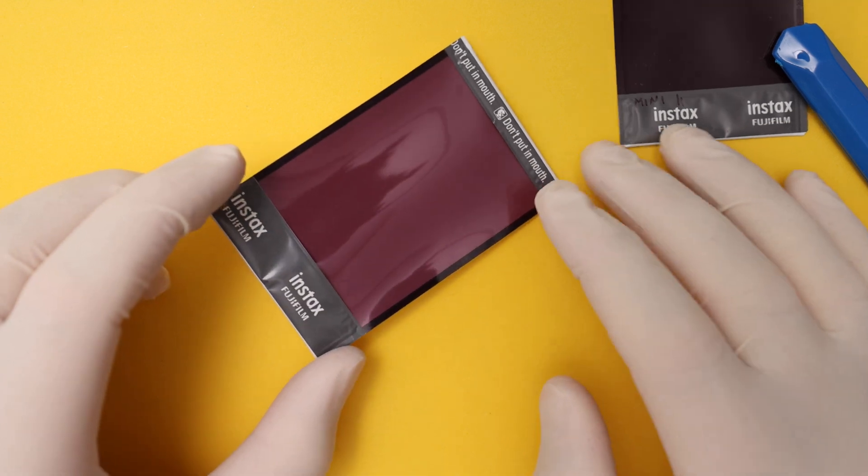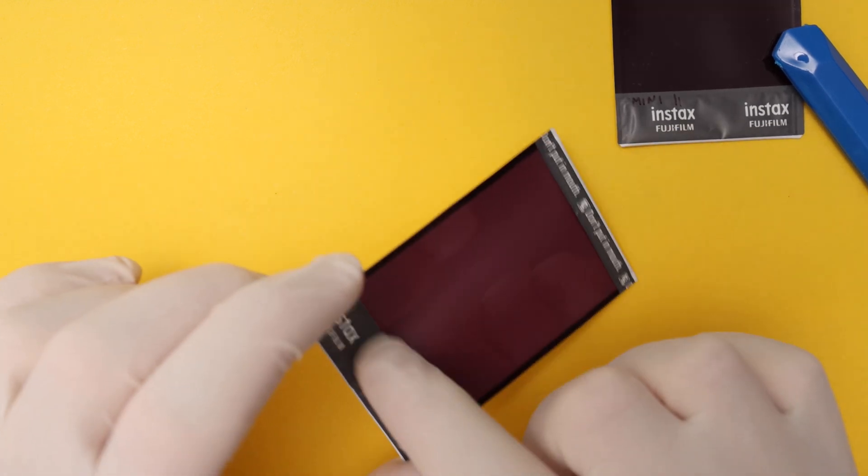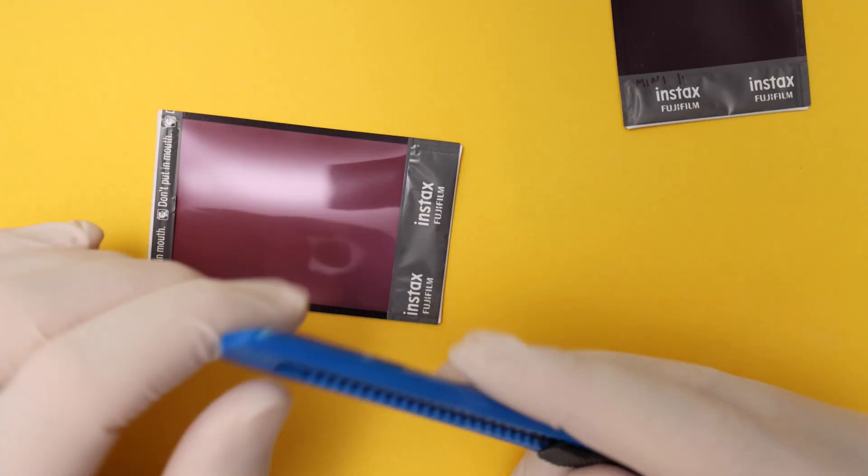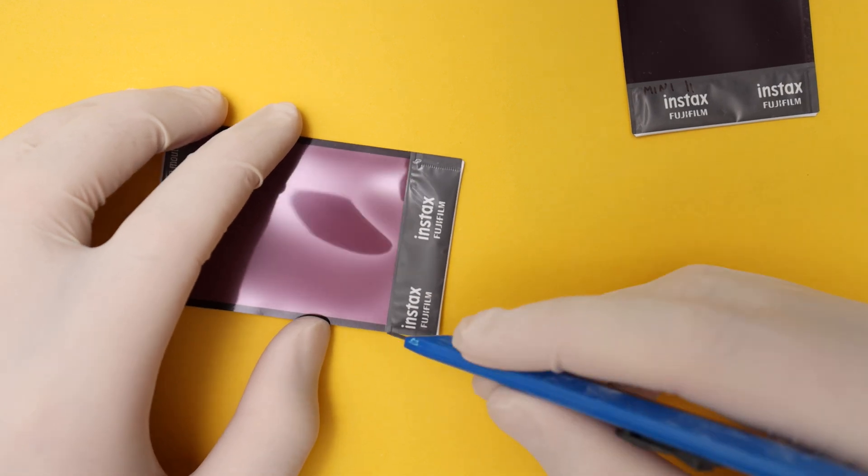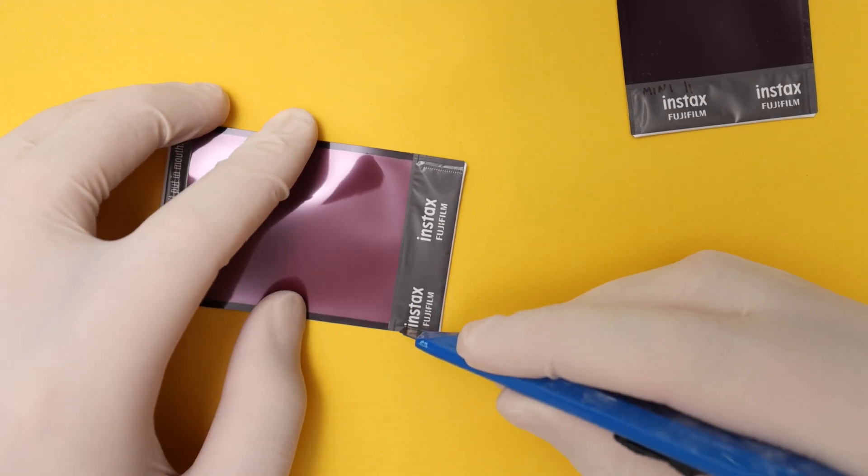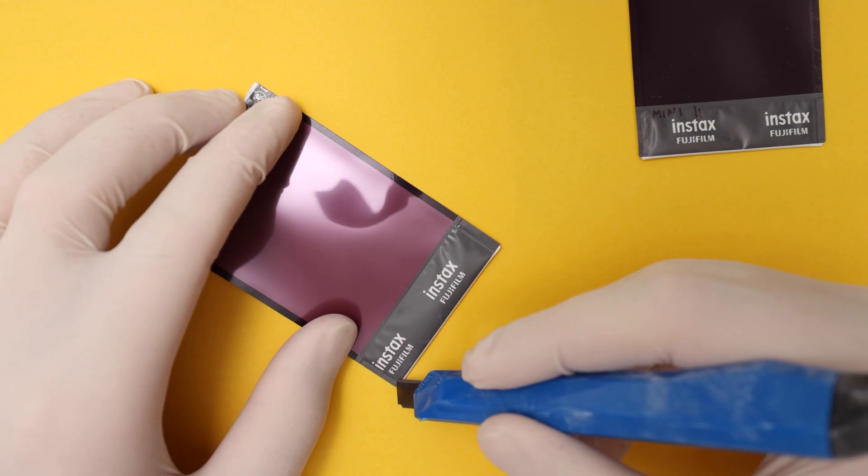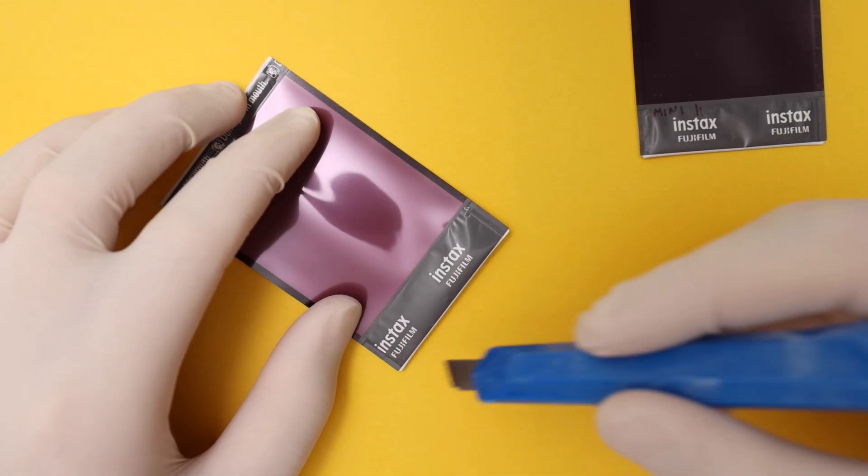So first let's open up the unexposed film. I'm gonna cut through this pouch right here with the box cutter, so let's open it up. There's probably several different layers of chemicals so we can kind of look into it and see what it looks like.